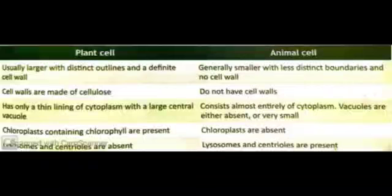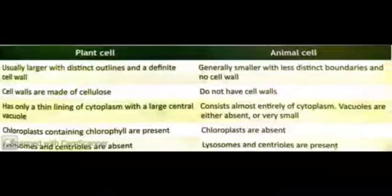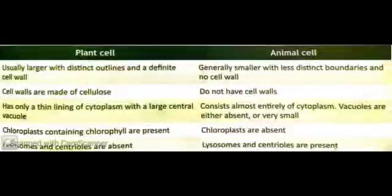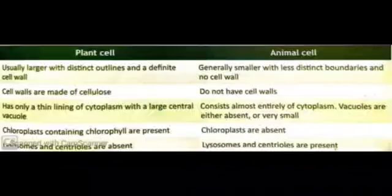First, plant cells are generally large in size with distinct outlines or boundaries because of the cell wall, while animal cells are smaller in size with less distinct boundaries. Second, plant cells have a cell wall composed of cellulose, whereas animal cells do not have a cell wall.